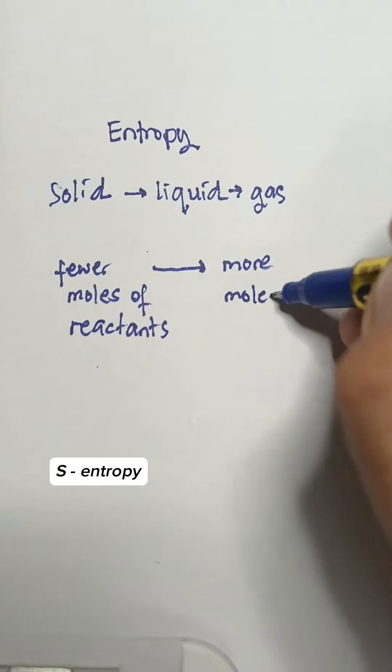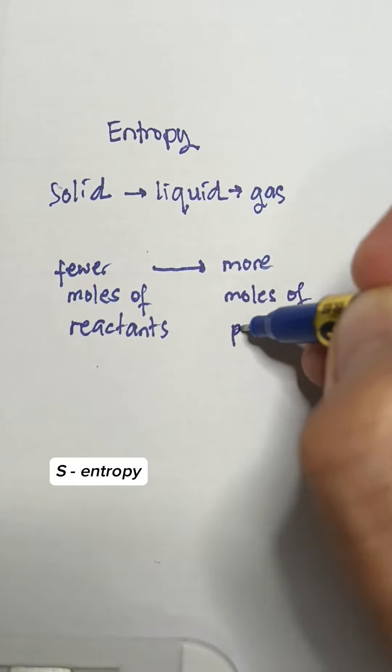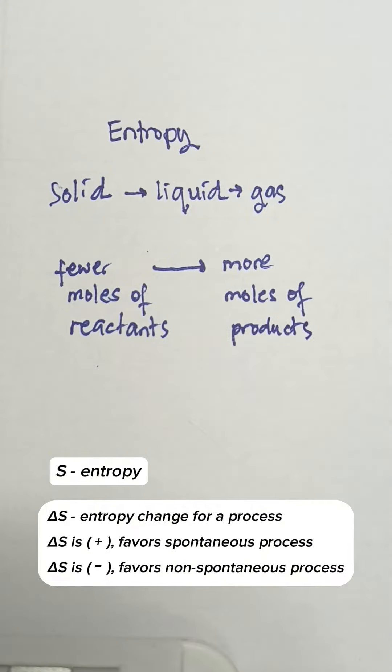The symbol for entropy is uppercase letter S, and the entropy change for a process is delta S.